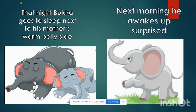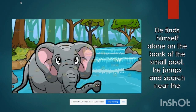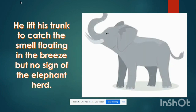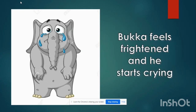Next morning, he wakes up surprised. He finds himself alone on the banks of the small pool. He jumps up and searches near the pool, but he couldn't find anyone over there. He lifts his trunk to catch the smells floating in the breeze. What's the meaning of breeze? Breeze means a light wind that is blowing. It's not a strong one, it's a really light wind. But there was no sign of the elephant herd. He couldn't find anyone over there.